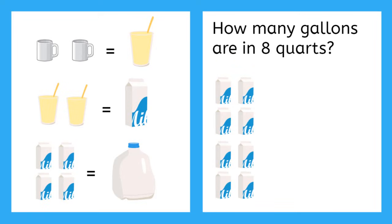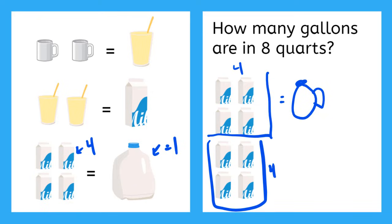How many gallons are in eight quarts? So remember, these are quarts down here. And four equals one gallon. So over here, if I count one, two, three, four, here's four quarts. Those are equal to one big gallon of milk. And then I have another four down here. So that is equal to another gallon. So if I have eight quarts, that equals two gallons.